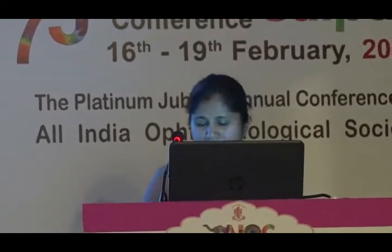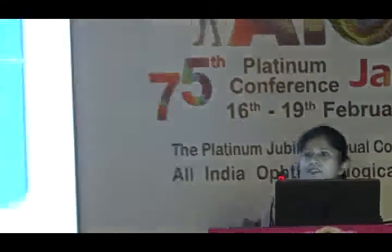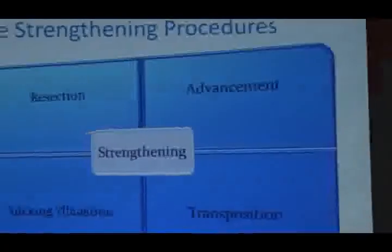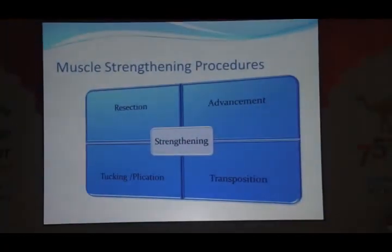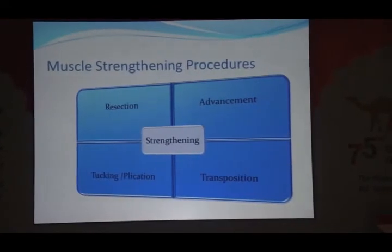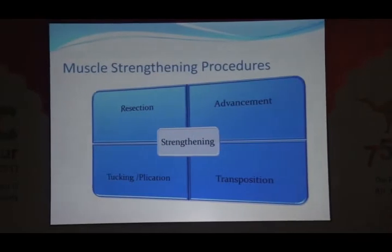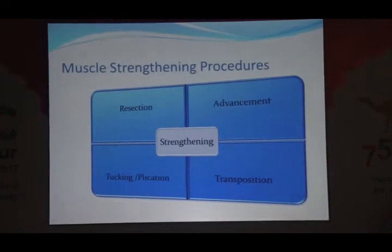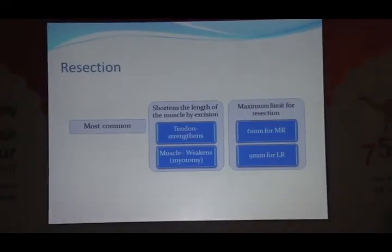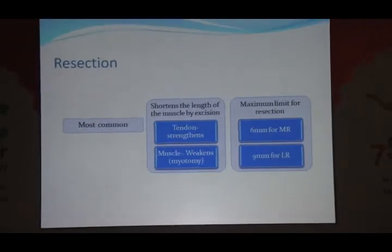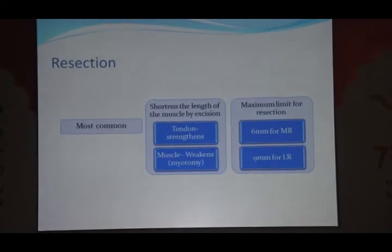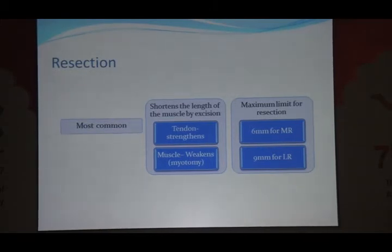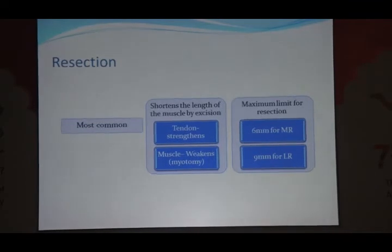Not just resections but plication also. Strabismus is all about balance. Once you have a recessed or weakened muscle, you also have to strengthen the other muscle to reach the orthoposition. There are various strengthening procedures: resection, advancement, tucking or plication, or transposition. I will be mainly focusing on resection as well as plication. Resection is the most commonly performed surgery — it acts by shortening the muscle by excision, increasing the length-tension curve so the muscle is shortened and its tension increases, making it stronger.